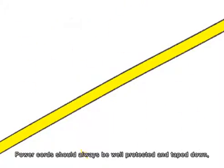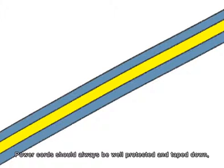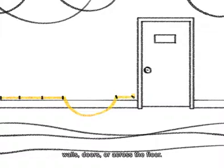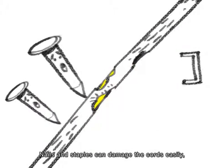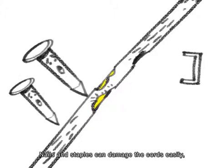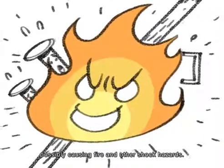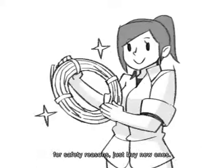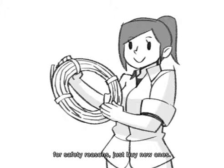Power cords should be well protected and taped down, and there should not be any loose cords running through walls, doors or across the floor. Nails and staples can damage the cords easily, possibly causing fire and other shock hazards. Do not attempt to repair cords. For safety reasons, just buy new ones.